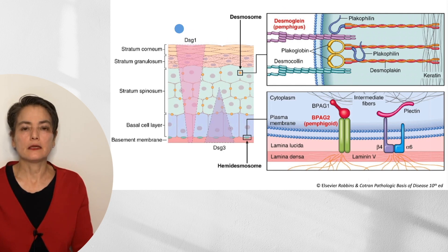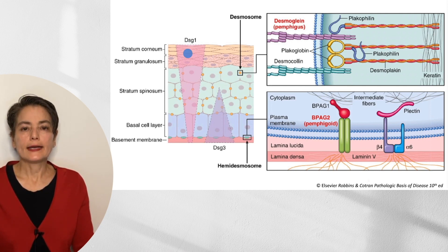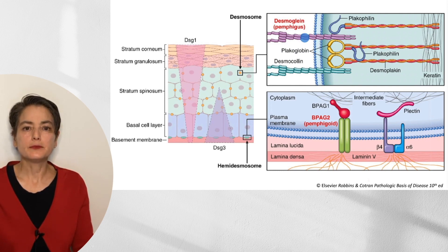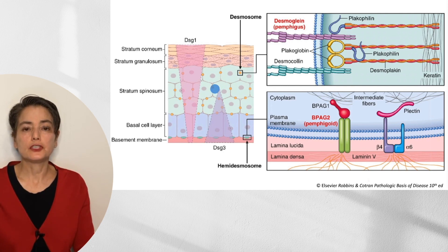There are two different types of desmoglion we need to think about in the skin. Desmoglion 1 is distributed throughout the entire epidermis — predominantly at the top, with somewhat lower levels as you go deeper. Desmoglion 3 is mostly in the lower areas of the epidermis. If you had an antibody directed against desmoglion 1, the inflammatory attack would break apart desmosomes across the entire epidermis — acantholysis. If something was just affecting desmoglion 3, only in the lower part of the epidermis would you see breaking apart of the desmosomes.